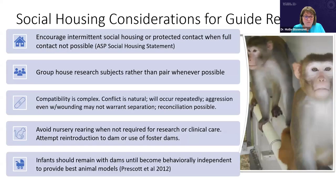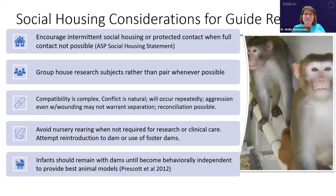Social living may be very important to the quality of biomedical science with non-human primates. It can improve repeatability, reproducibility, and external validity. Investigators in SIV research believe social housing enhances translation of their work to humans, who are, after all, socially housed, and that it can improve the quality of science by reducing variability, probably through reducing stress. My points for consideration in the next guide include: encouraging intermittent social housing or any type of social housing when full contact isn't possible; group housing research subjects rather than pairing them when possible; and more attention given to social compatibility. Aggression, even with wounding, does not necessarily mean animals should be separated, as they have the ability to reconcile and maintain long-term bonds. We should also avoid nursery rearing when not required for research or clinical care, and infants should remain with dams until they become behaviorally independent.